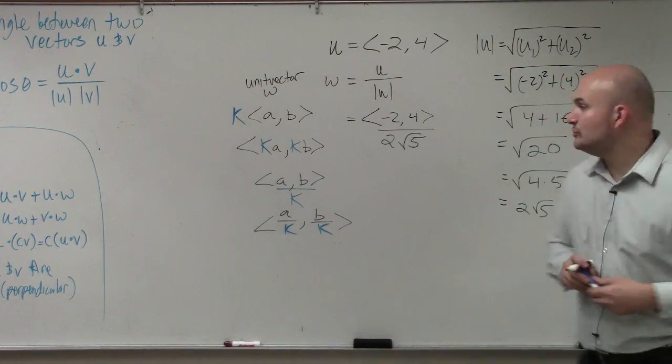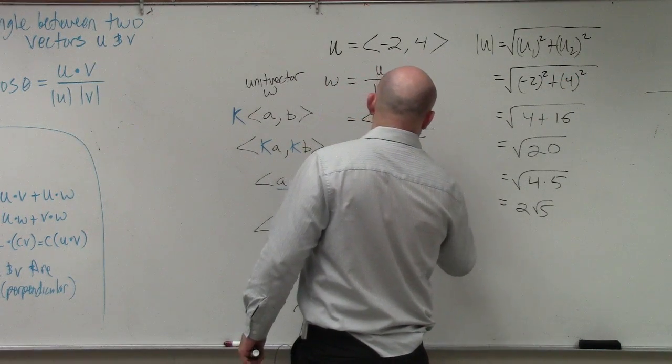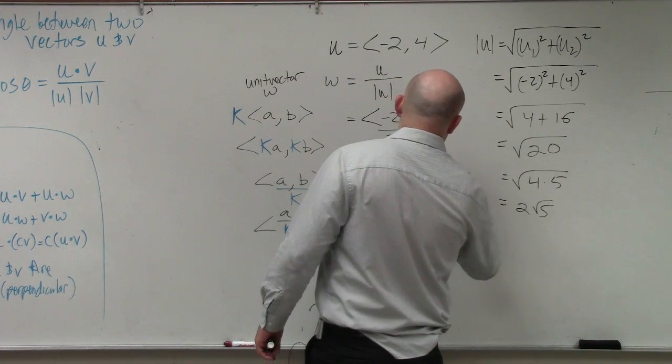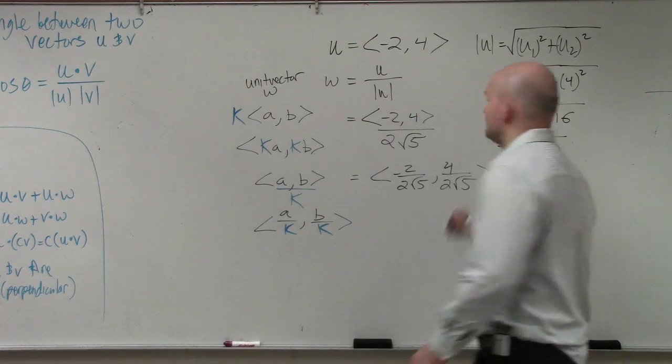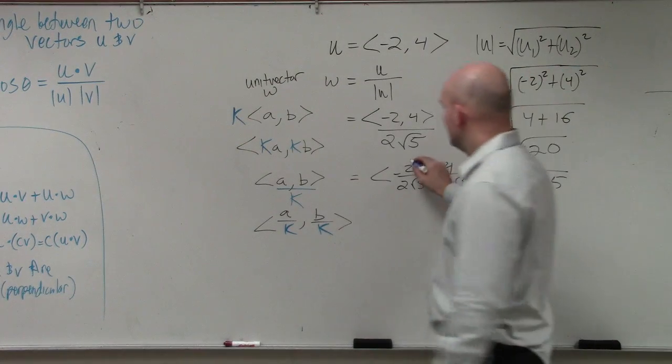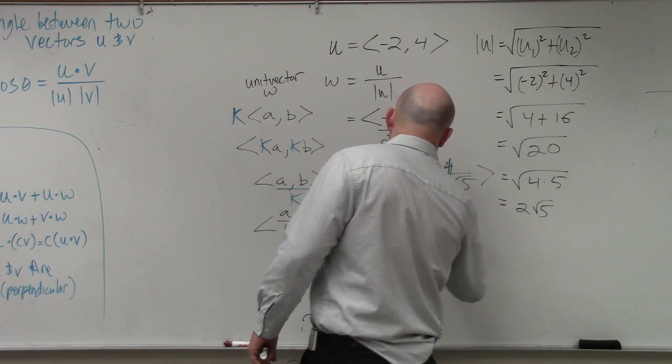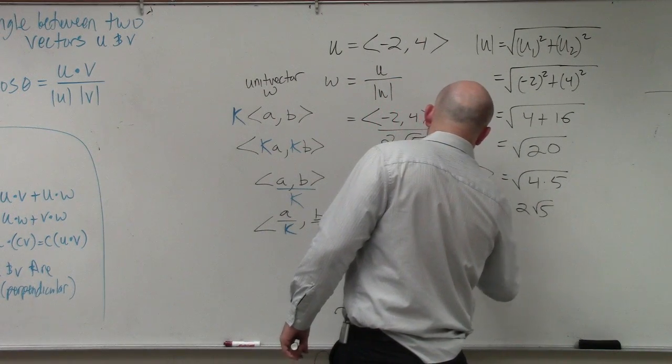So, my unit vector is now going to be negative 2 over 2 square root of 5 comma 4 over 2 square root of 5. Where, now, we can simplify this. So, my final unit vector is negative 1 over square root of 5 comma 2 over square root of 5.